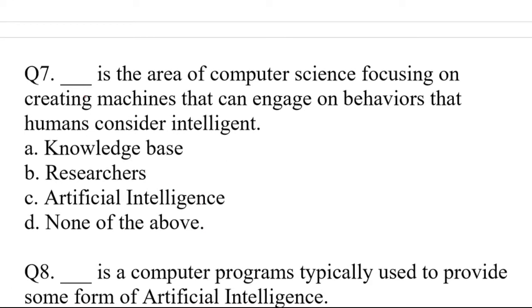Question number seven. Dash is the area of computer science focusing on creating machines that can engage on behaviors that humans consider intelligent. The four options are A. Knowledge Base, B. Researcher, C. Artificial Intelligence, D. None of the above. Right answer is option C. Artificial Intelligence.